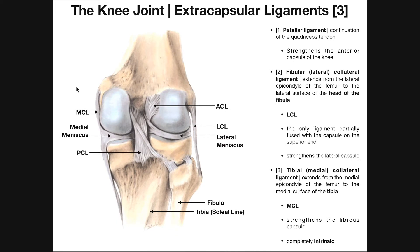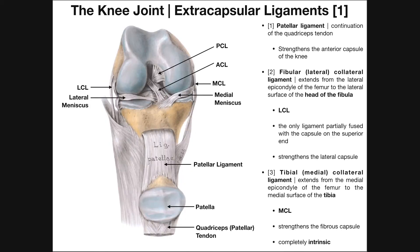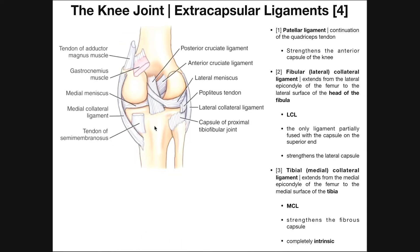Now I'm going to give you another trick for differentiating the ACL and PCL that's more useful when you don't have all this detail. I can easily tell this is the posterior view because there's no patellar ligament, no tibial tuberosity on the tibia, I can see the soleal line, and I can tell which side is lateral because this is the fibula. But what if you're not given a very detailed picture of the knee and you're asked to differentiate the ACL and PCL? We'll look at this picture — this is our PCL, and this is our ACL.